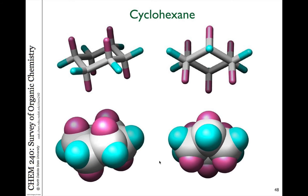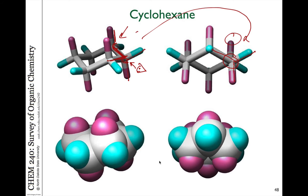One thing to notice about these cyclohexane chair structures is the positions of all groups relative to each other. If you look down any specific carbon-carbon bond — for example, on this structure on the left — we have a carbon in front and a carbon in back. Looking down that bond, we see a Newman projection-like view with a pink hydrogen down, a blue hydrogen out to the right, and the ring carbon-carbon bond to the left on the front carbon, and corresponding groups on the back carbon. All the bonds are staggered 60 degrees apart from front to back, and that's true looking down any of the carbon-carbon bonds.